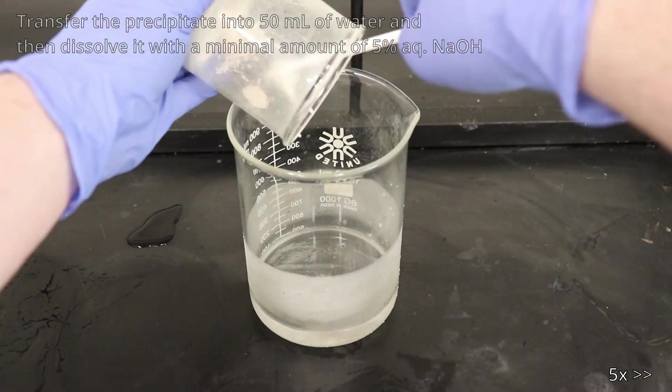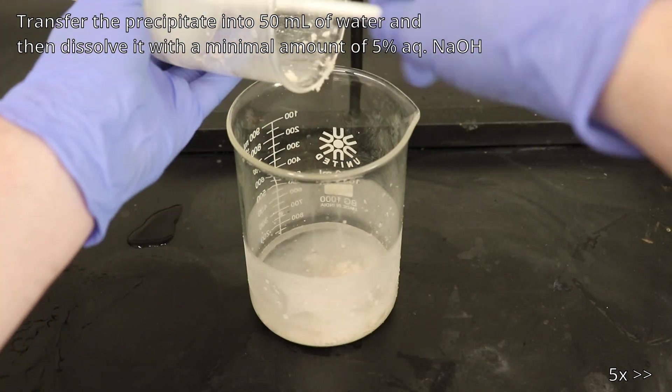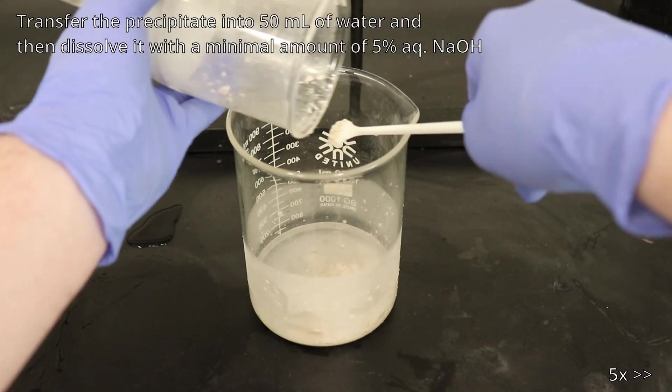The filtered 2-naphthol was transferred to a beaker with a small amount of water, and then dissolved with a minimal amount of 5% sodium hydroxide solution, and then refiltered.